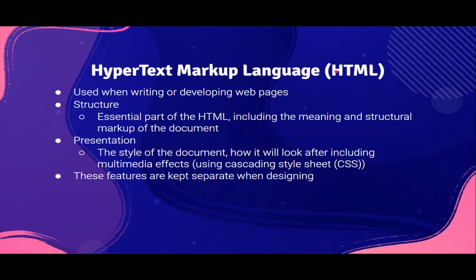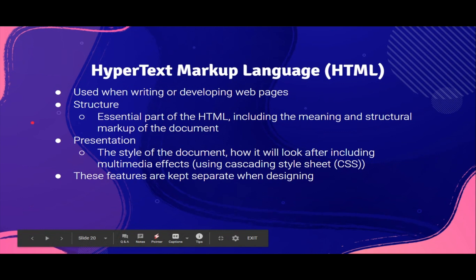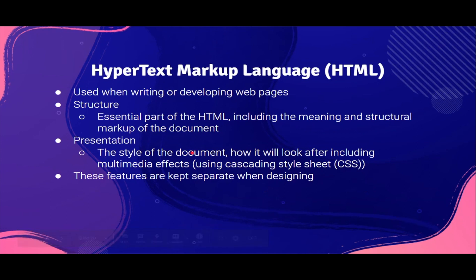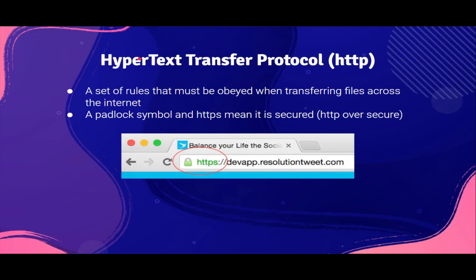There are two main features of HTML: structure and presentation, and these features are kept separate when designing. Structure is the essential part of the HTML, including the meaning and structural markup of the document. Whereas presentation is basically the style of the document — how it will look after including multimedia and special effects — using cascading style sheet, which is CSS. This covers color and design and all that, whereas structure is where the content is.